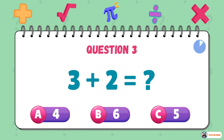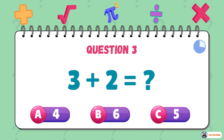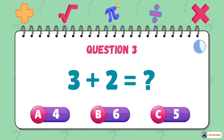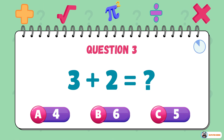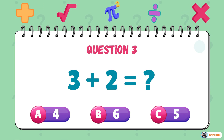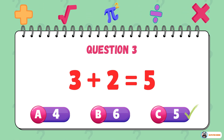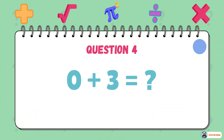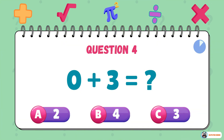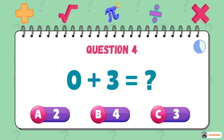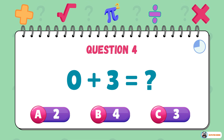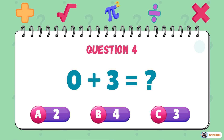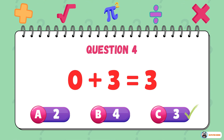What is 3 plus 2? The answer is 5. What is 0 plus 3? The answer is 3.